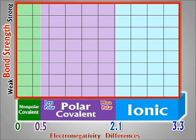As we go from electronegativity differences of zero all the way to 3.3 — the largest possible difference — these are all the ranges you can have. 3.3 is the maximum because Linus Pauling defined the highest electronegativity as 4 and the lowest as 0.7, so 4 minus 0.7 equals 3.3. That bar does not keep going. Those are all the ranges possible.